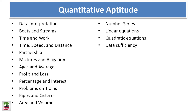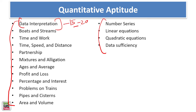For quantitative aptitude, topics include: data interpretation, boats and streams, time and work, time speed and distance, partnership, mixtures and allegation, ages and averages, profit and loss, percentage and interest, problems based on trains, pipes and cisterns, area and volume, number series, linear equations, quadratic equations, and data sufficiency. Data interpretation is most important — 15–20 marks directly. Number series is very important, and approximation also carries many questions.